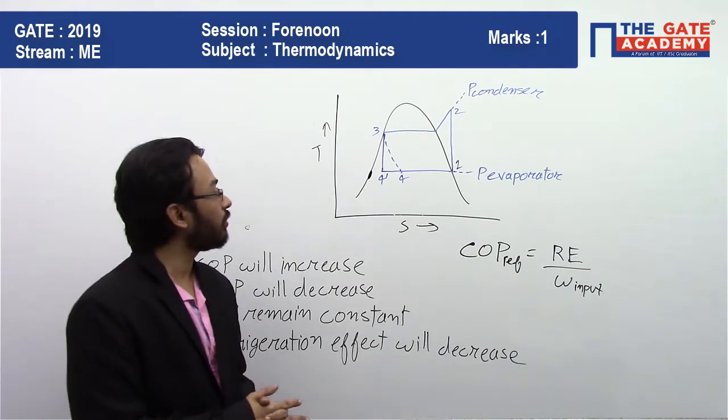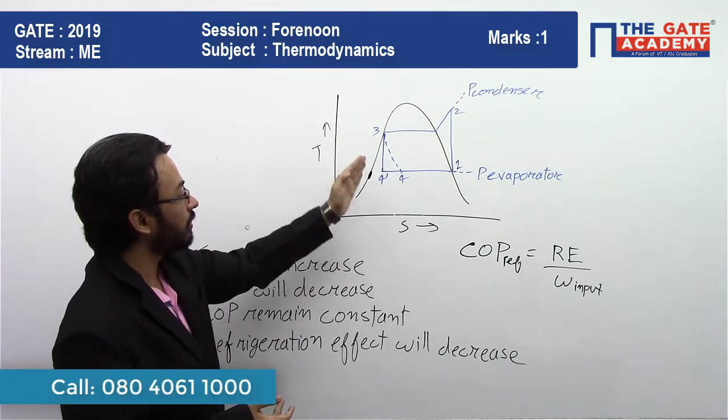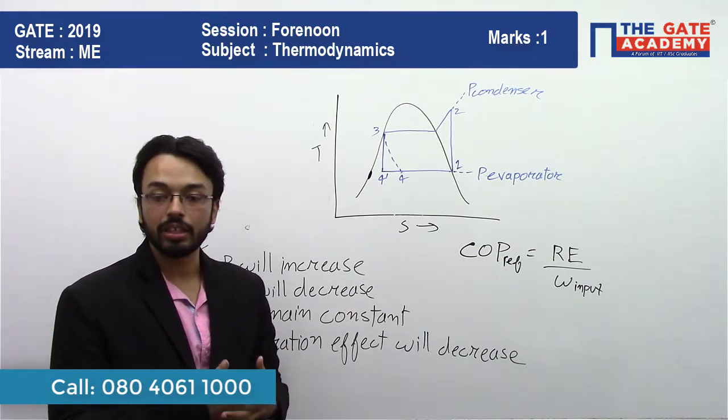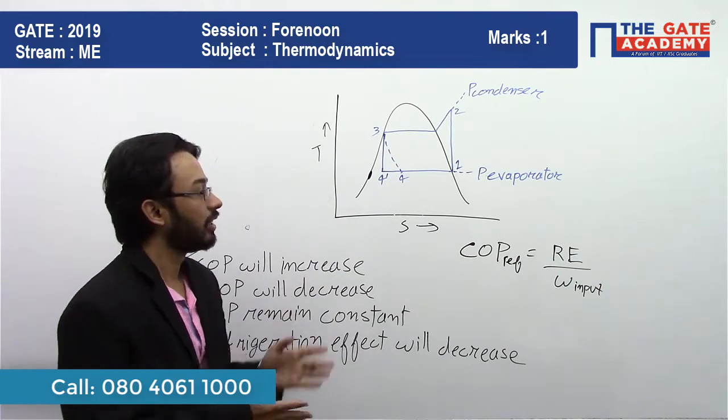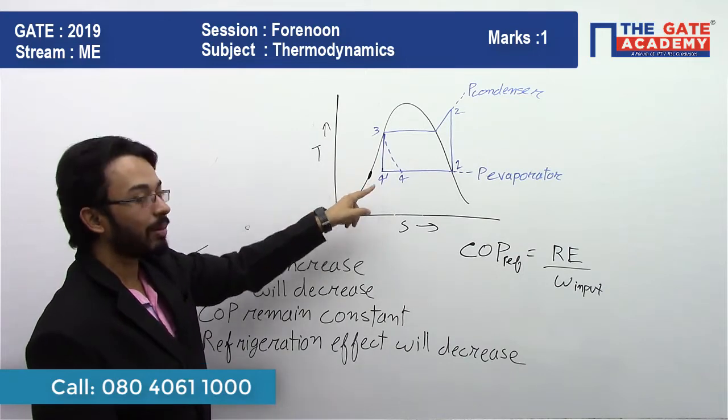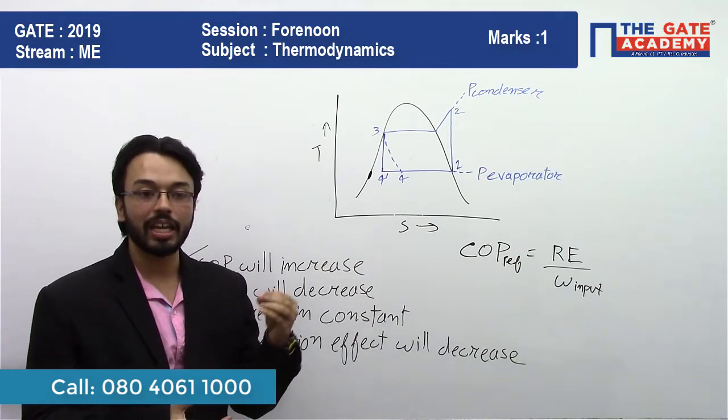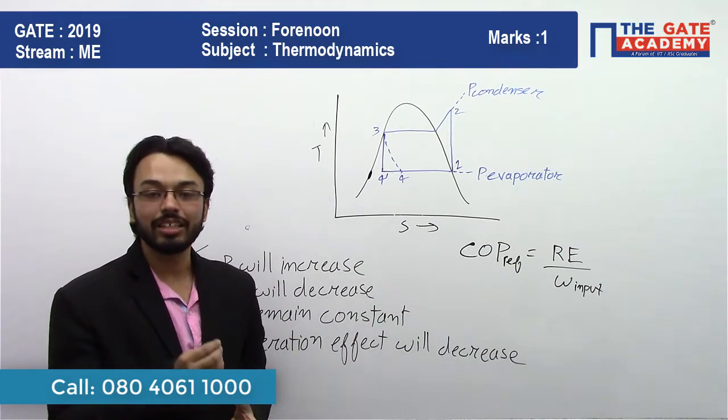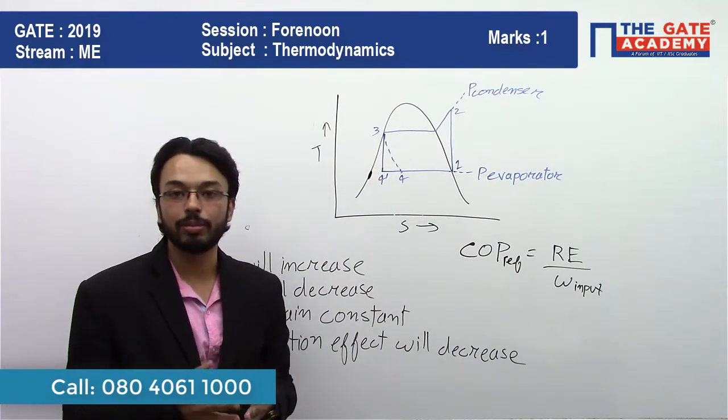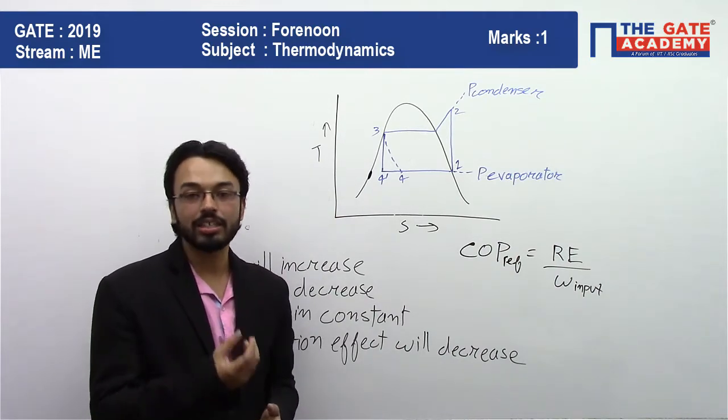Now if you are curious that why we throttle it? If we know that by reversible adiabatic expansion we can increase the refrigeration effect, then we can increase the COP. But still, why do we throttle? That is because of practical constraint, because to expand it reversibly adiabatically you need to construct a small turbine. Remember that when the expansion is carried out adiabatically, some work is generated.